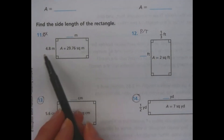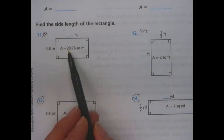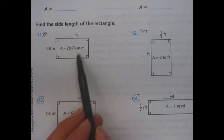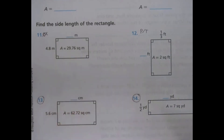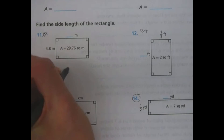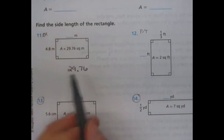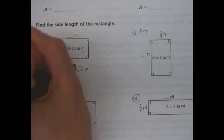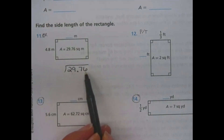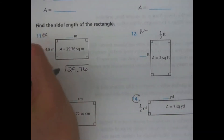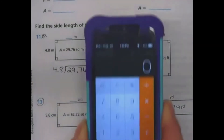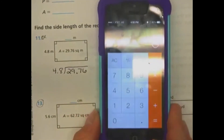Some of you might be thinking — yikes, we have to do some pretty big division. You can do it by hand; however, we are going to be very nice and let you use a calculator. You've got to make sure you write out your equation so we know you understand how to do this. Please still show what you are doing. Here, I'm still going to show 29 and 76 hundredths divided by 4 and 8 tenths, and plug that into the calculator.